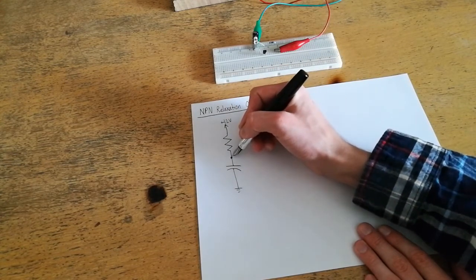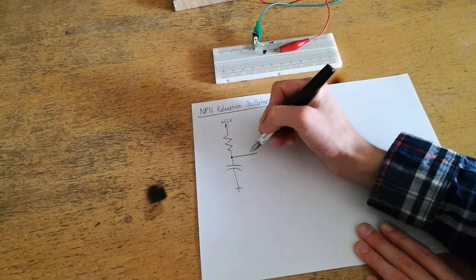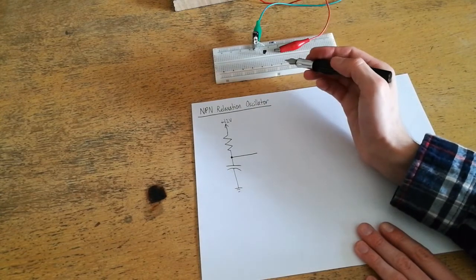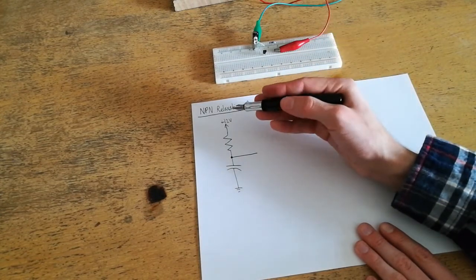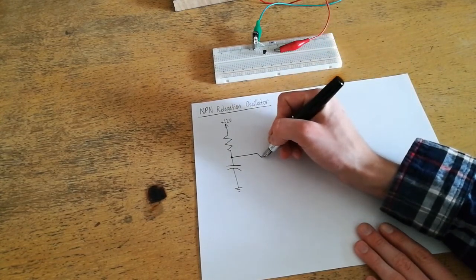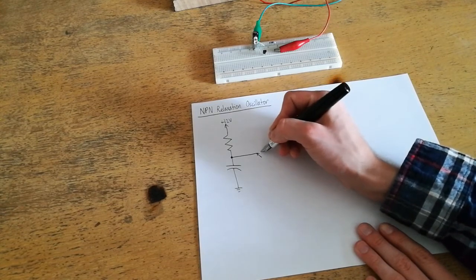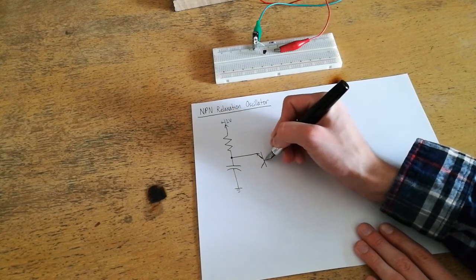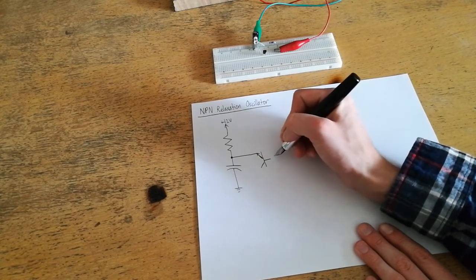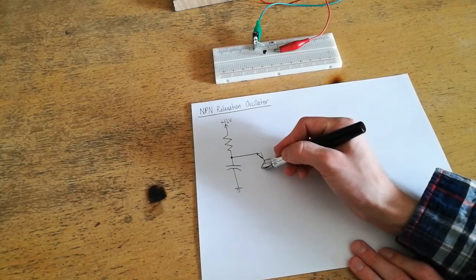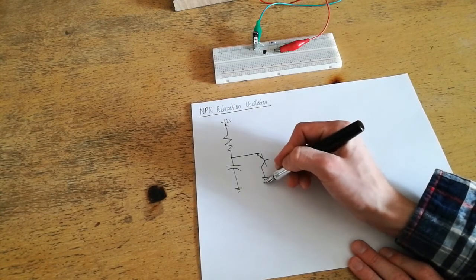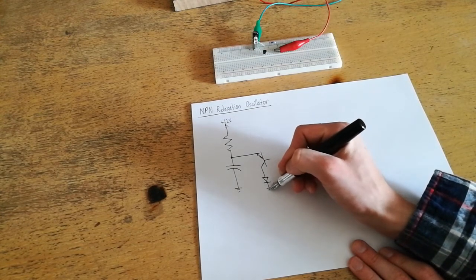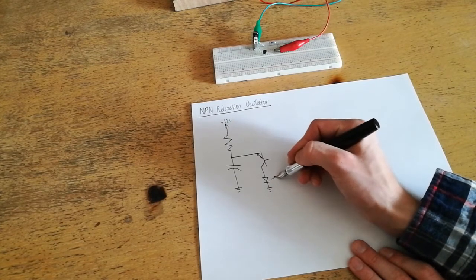But here's where the magic sauce comes in. A separate line is run off to a bipolar junction transistor, specifically an NPN, and it's connected in reverse polarity. That's right, it's actually connected like this. The base is left floating, and then the collector is connected to an LED or other output device, which is then part of the completed circuit.